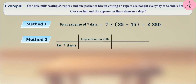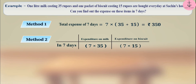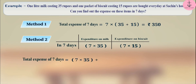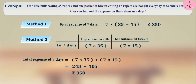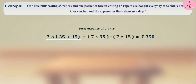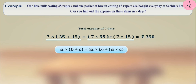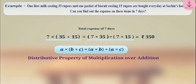Method 2: first find the amount spent on milk in 7 days, which is 7 into 35. Similarly, find the amount spent on biscuits in 7 days, which is 7 into 15. Then add them: total expenditure equals 7 into 35 plus 7 into 15, which is 245 plus 105, which equals 350. Thus, the total expenditure obtained by both methods is the same. So 7 into (35 plus 15) equals 7 into 35 plus 7 into 15. This is the distributive property of multiplication over addition.